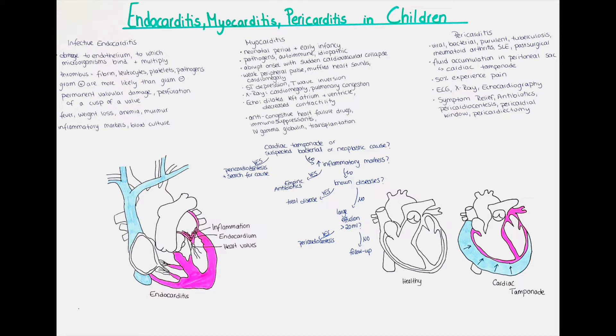Intravenous gamma globulin can help in some cases with the inflammatory response. Despite all treatment, unfortunately many patients progress over months or years to a severe dysfunction of the heart muscle which eventually leads to death. A heart transplantation is a way to help them, but it unfortunately is connected to poor prognosis.